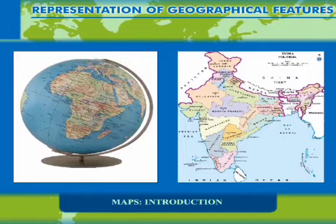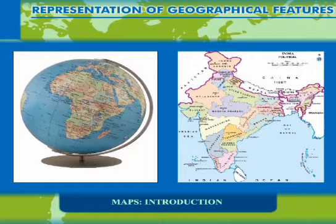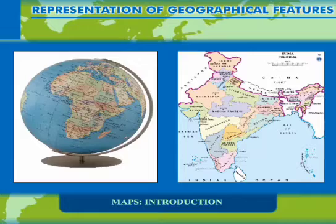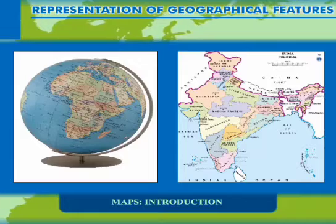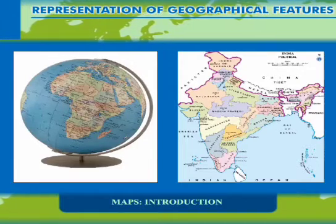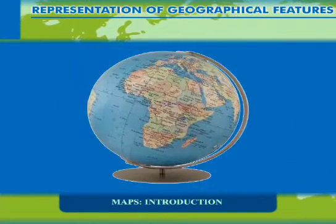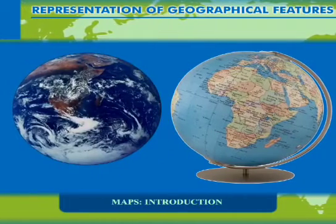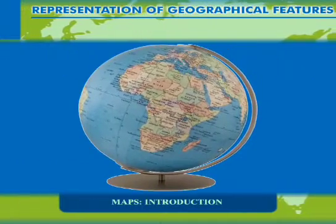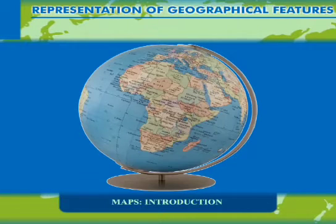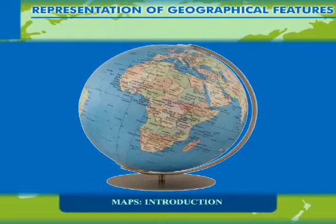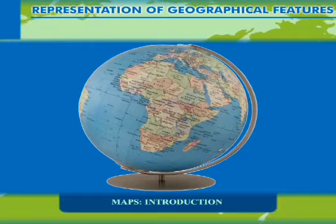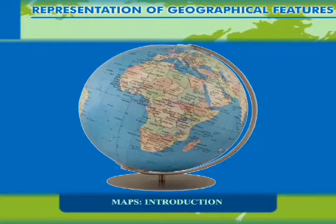Globes and maps are two important tools of geography. Both are very useful in studying the earth's surface. Globes, which are spherical in shape, are the exact replica of the earth. As the globes are of the same shape as that of the earth, they represent the shape of the land mass and the water bodies with great accuracy.